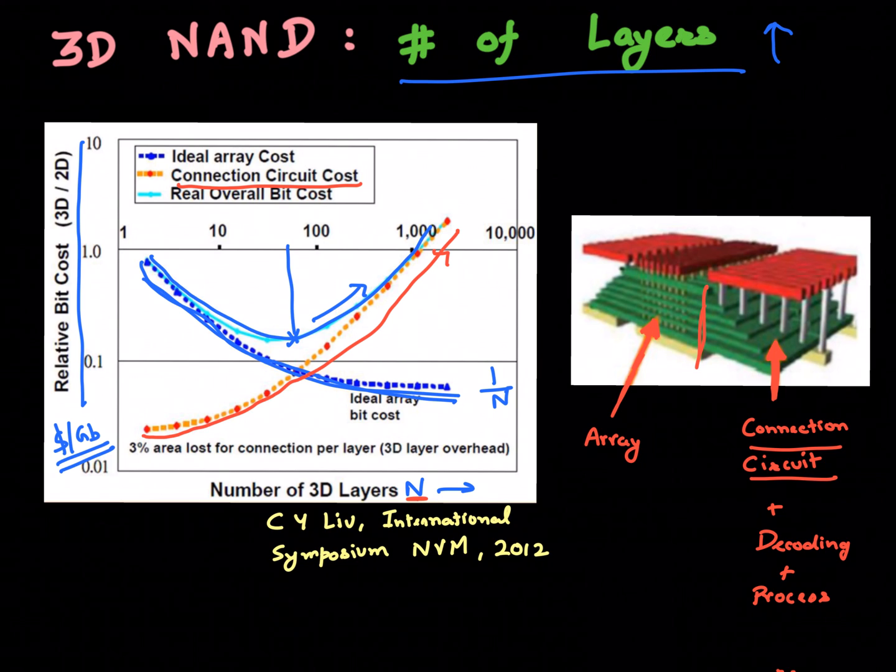You can debate when does this happen, but most people are scaling up from 32 to 48 to 64, so for sure till 64 we are on this part of the curve. But as you go beyond 96 and so on, it might happen that it might make little sense to increase the number of layers beyond 96 or so.